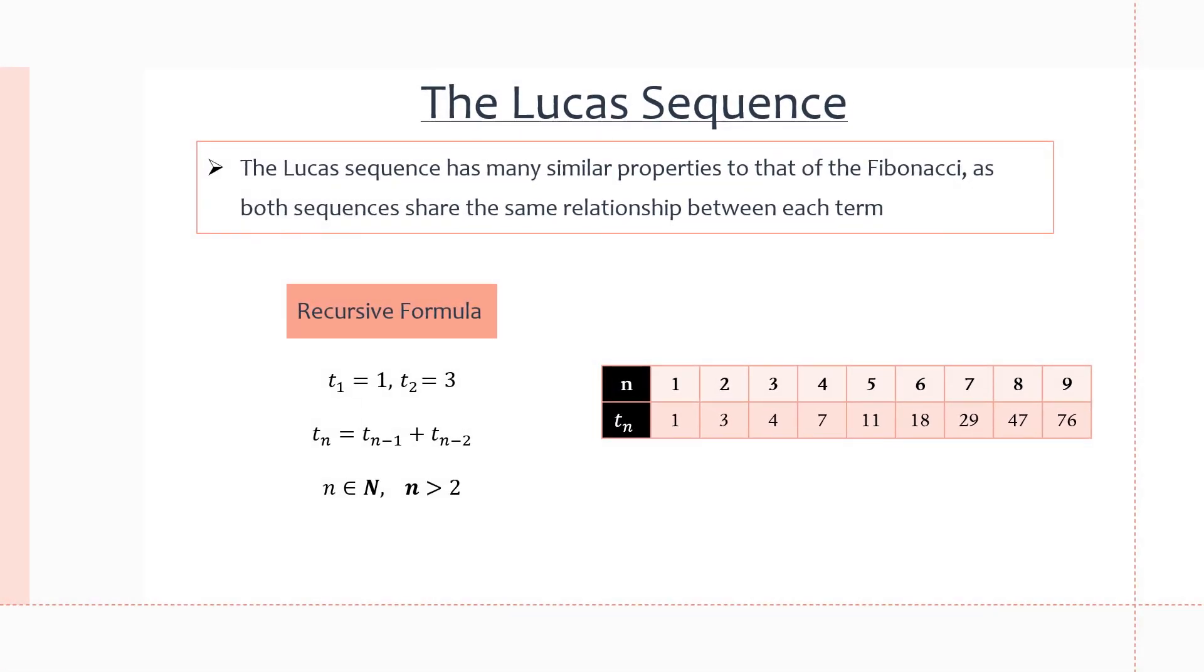Next, and very similar to the Fibonacci, we have the Lucas sequence. And it holds many of the similar properties to that of the Fibonacci sequence as they share the same relationship between each term. We can see this in the recursive formula below. The recursive formula is actually exactly the same.